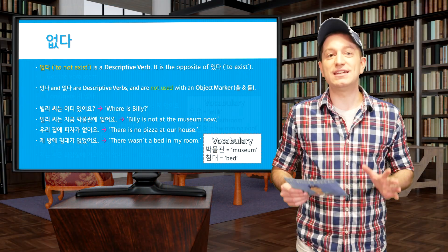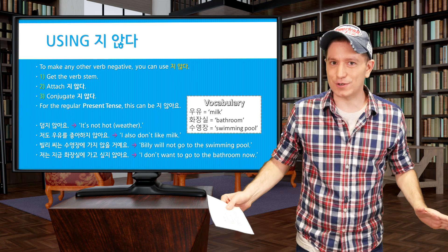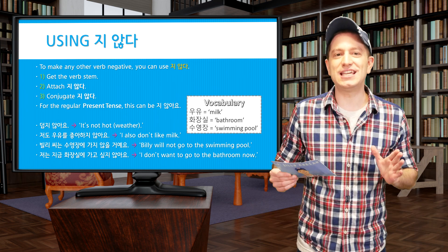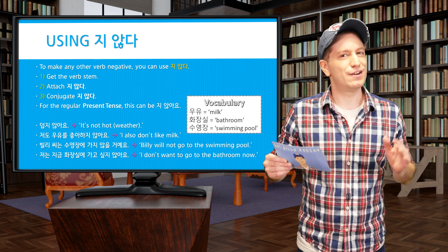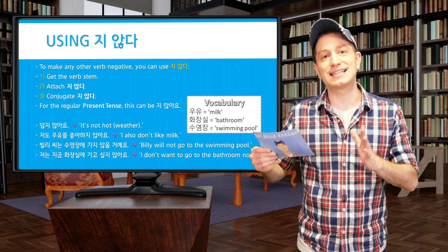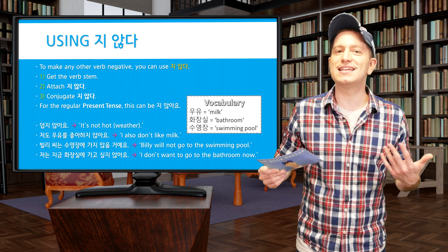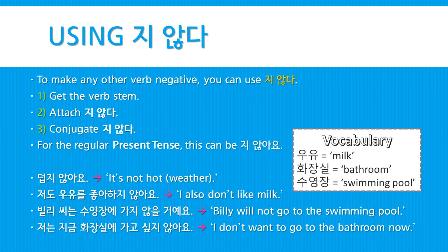Now that we've learned the most common negative verbs, let's talk about how to turn any other verb negative. You're going to do that with the verb ending 지 않다. Take a verb stem and attach 지 않다, then conjugate it. In the present tense informal form this becomes 지 않아요. Examples: 덥지 않아요 — It's not hot. 저도 우유를 좋아하지 않아요 — I also do not like milk. 빌리 씨는 수영장에 가지 않을 거예요 — Billy will not go to the swimming pool. 저는 지금 화장실에 가고 싶지 않아요 — I do not want to go to the bathroom now.